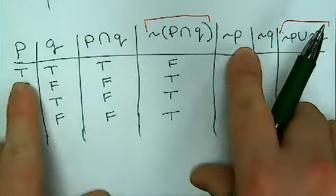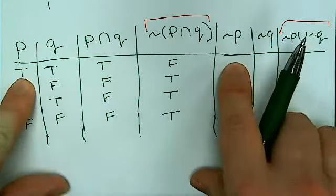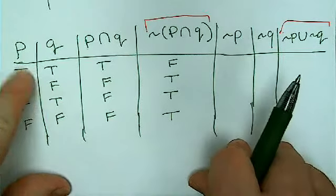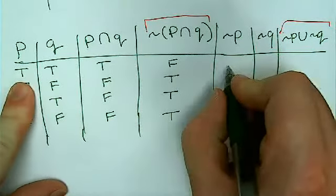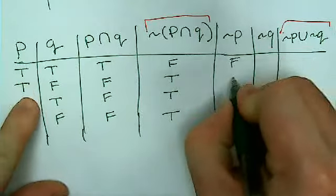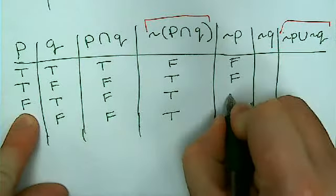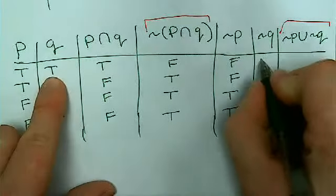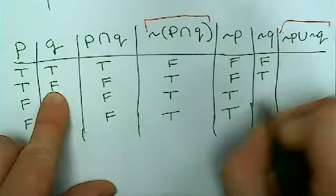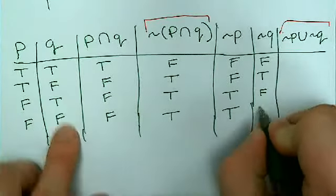Not P. I'm going to take these two columns, fill them in here, and look at them over here. So true becomes false. True becomes false. False becomes true, true. And then I reverse the Qs: false, true, false, true.